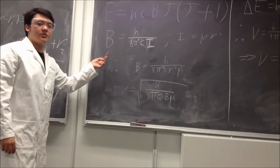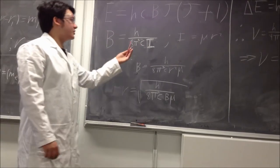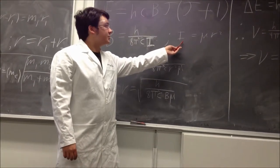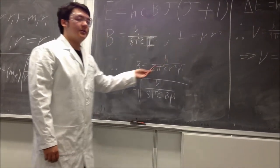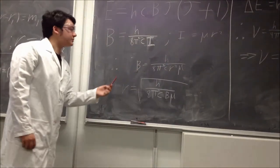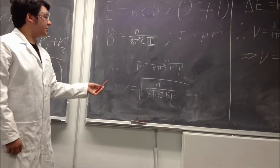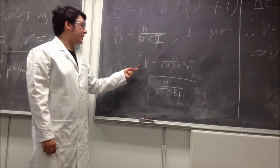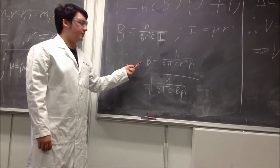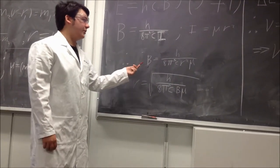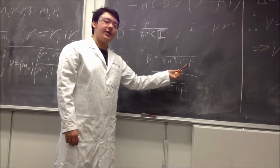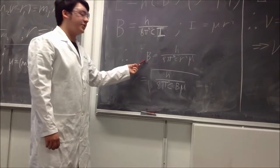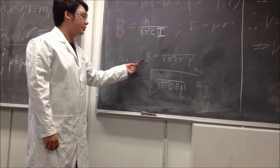We may reconfigure this equation using the equation we talked about previously about moment of inertia. With substitution, we have this equation for B where now we have the bond length and the reduced mass within the rotational constant equation.